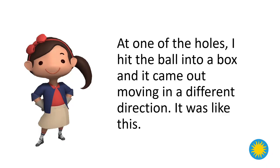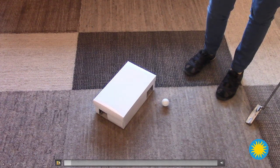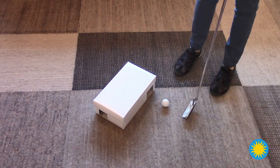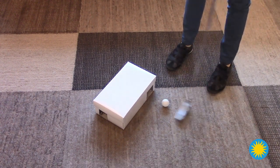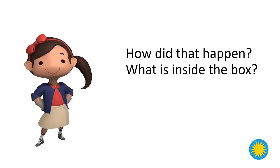At one of the holes, I hit the ball into a box and it came out moving in a different direction. How did that happen? What is inside the box?